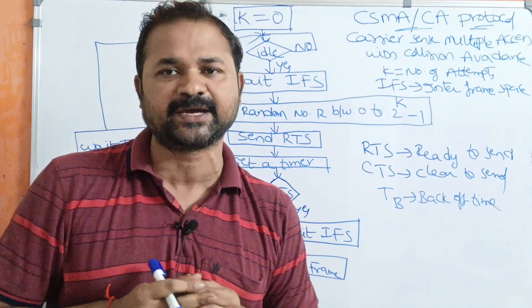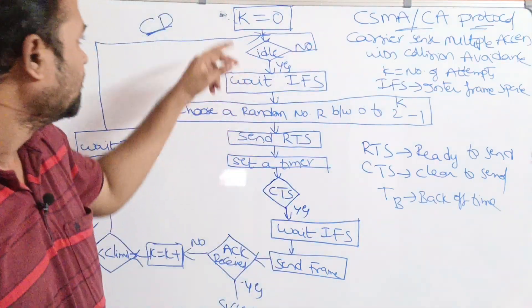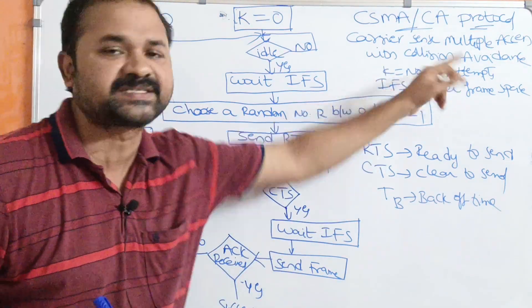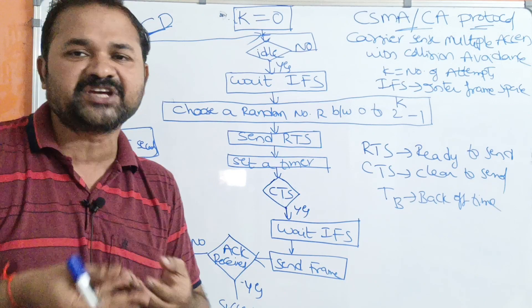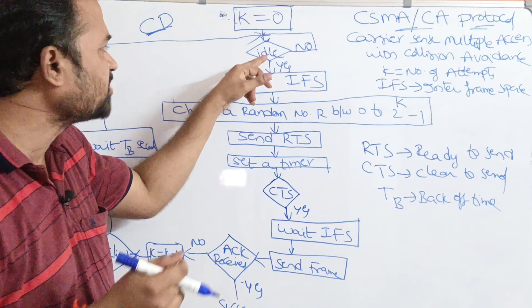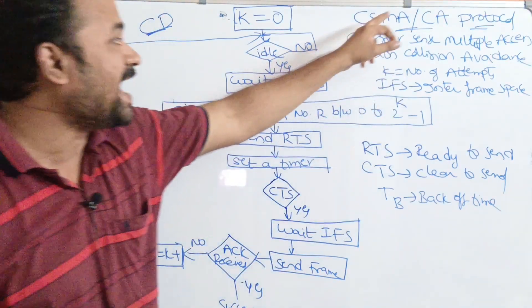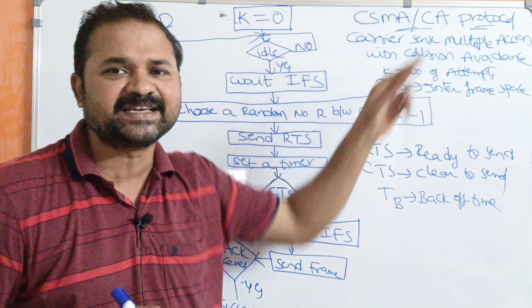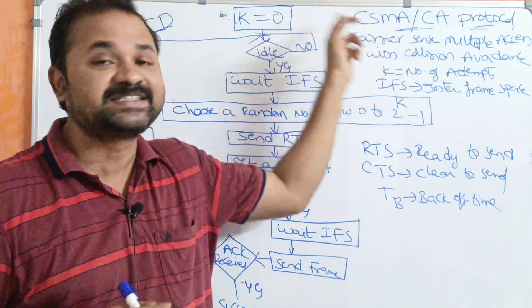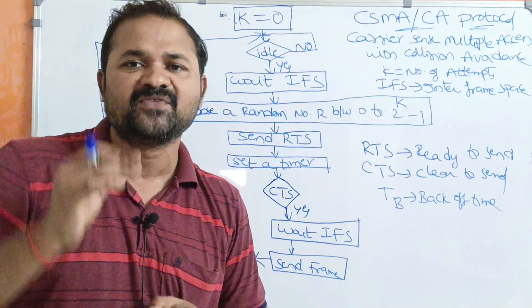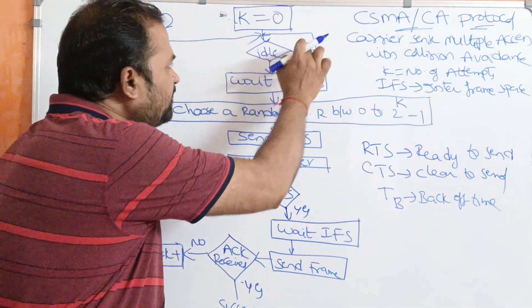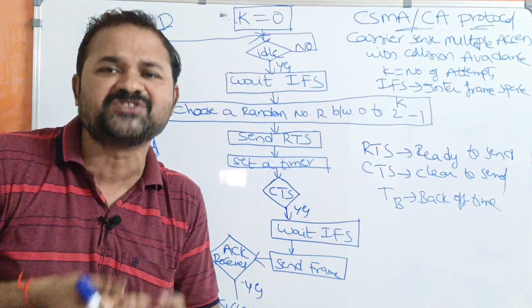Let us see the flowchart. Initially, the value of K is initialized to zero. K represents the number of attempts. Next, we have to check whether the channel is idle or not — this is the 'carrier sense' step. Before transmitting data, the station has to sense the carrier and check whether it is idle or busy.